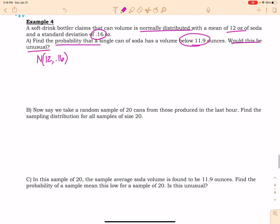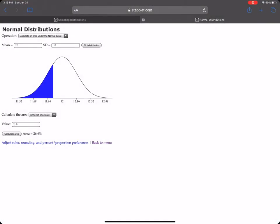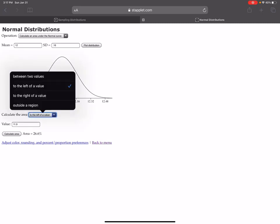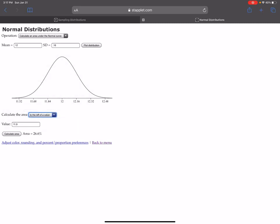So I am just going to find the probability of that happening. So here's 12, here's 11.9, and I want to find the probability that one can of X, one can of soda, I'm letting X represent that, is less than 11.9. Okay, so all I'm going to do is run over to staplet. So I've got the mean of 12 and the standard deviation of 0.16. So I'm plotting that distribution. I want the area to the left of 11.9.